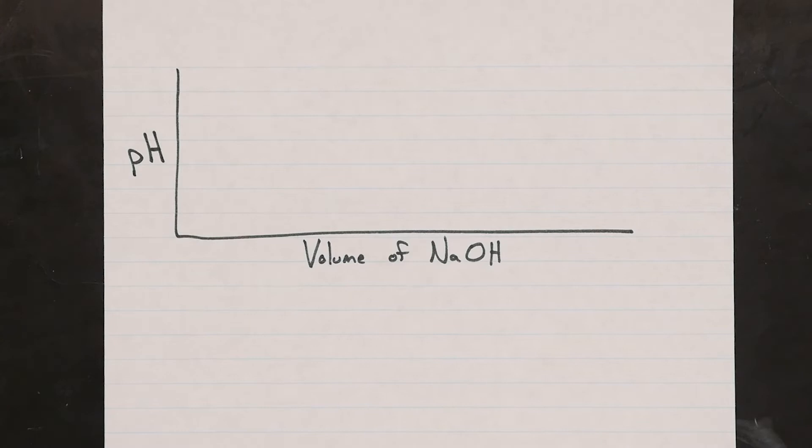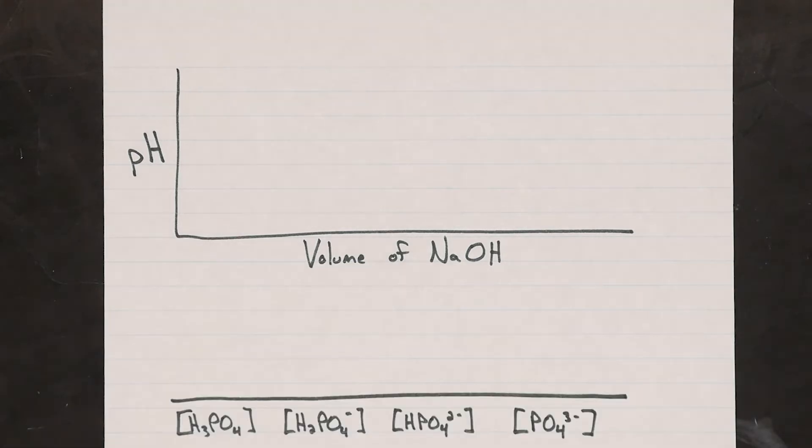Alright, let's imagine what will happen to the pH of a phosphoric acid solution as we slowly add some strong base to it. We start with a solution that contains about 100% phosphoric acid, since it's a weak acid and therefore doesn't give up its proton readily. If we slowly add some base, like NaOH, some phosphoric acid molecules will be forced to give up their proton and turn into dihydrogen phosphate.